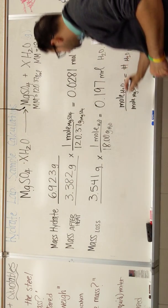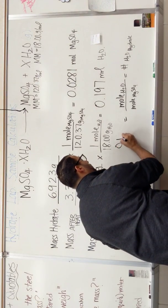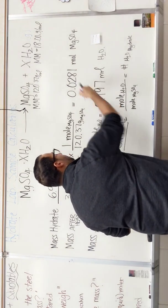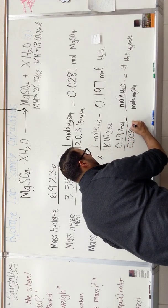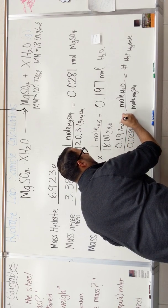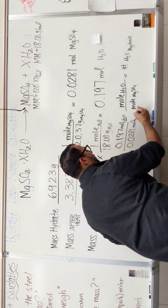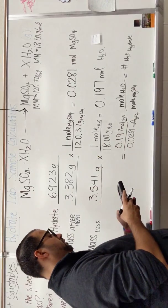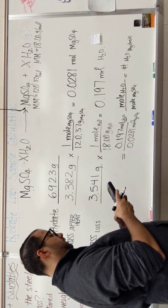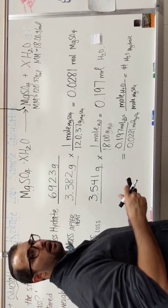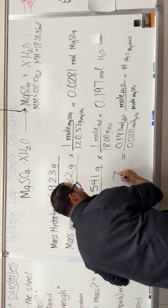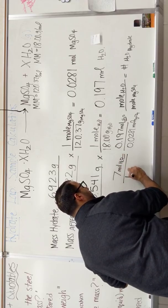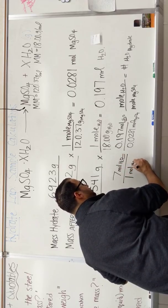So if I do this, I'll have 0.197 moles over 0.0281 moles of H2O for MgSO4. And I will get, if I do this math correctly, 0.197 divided by 0.0281. Look at that. I get about 7 moles of H2O for every 1 mole of MgSO4.